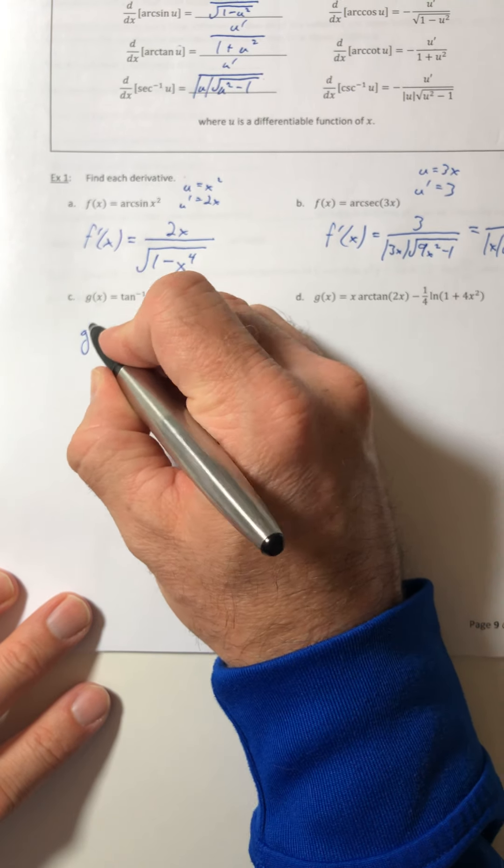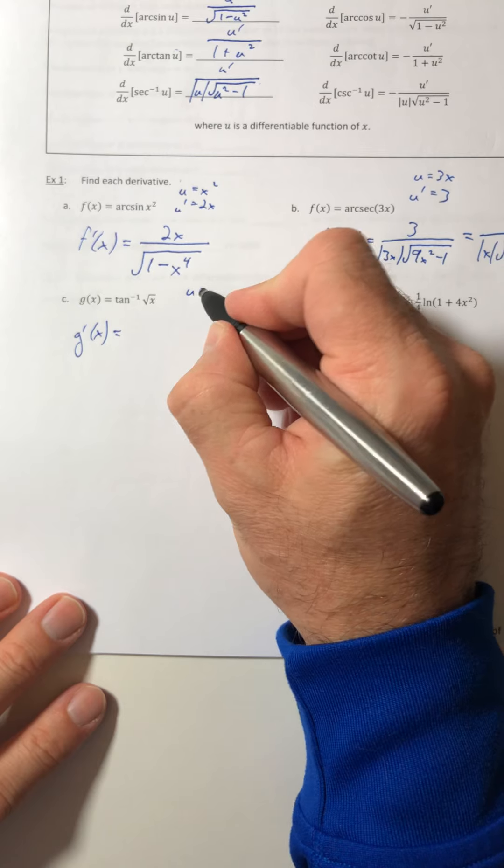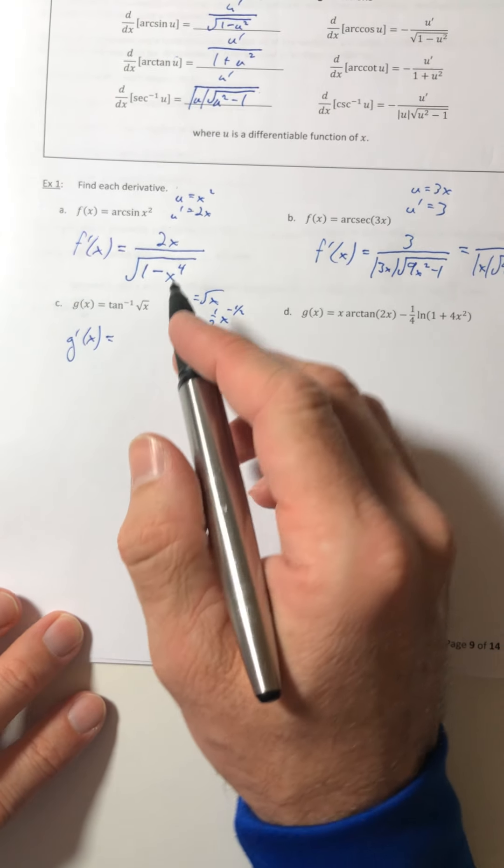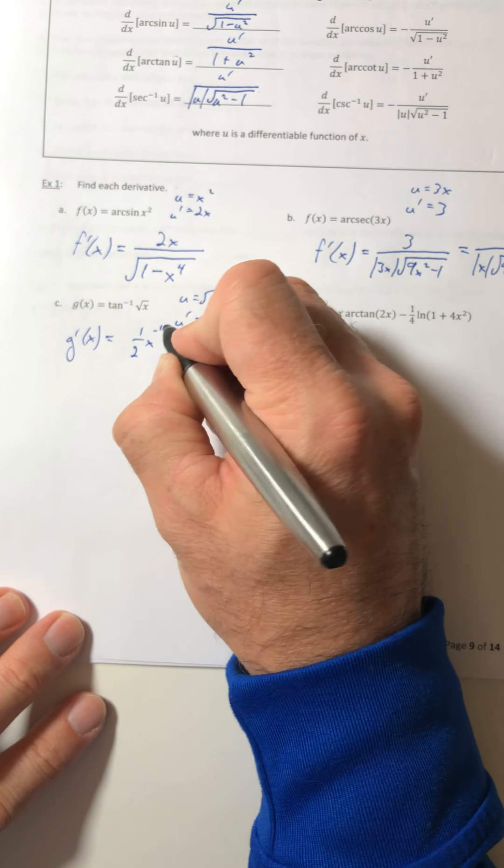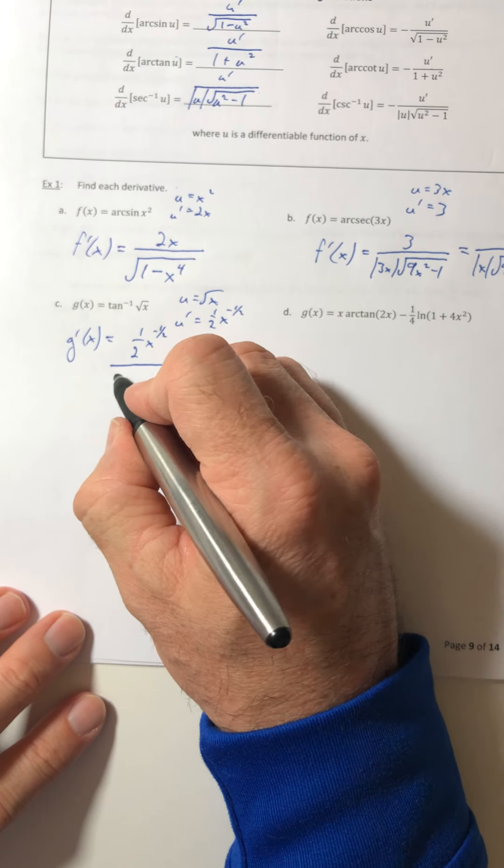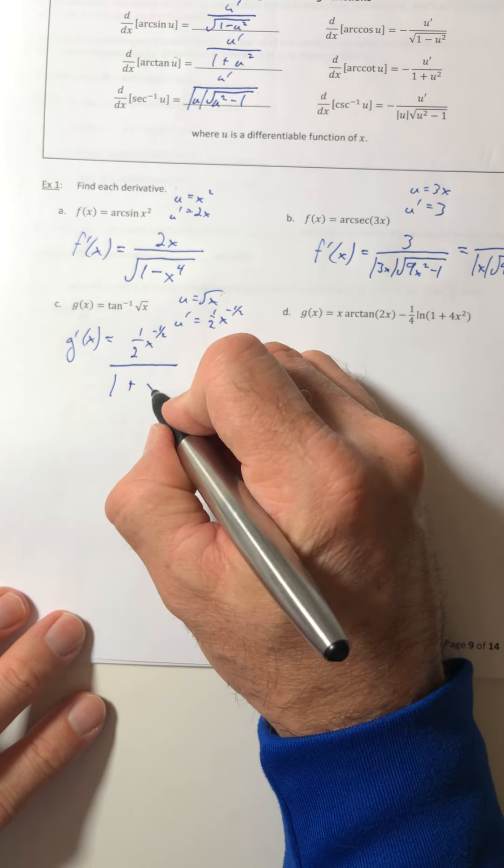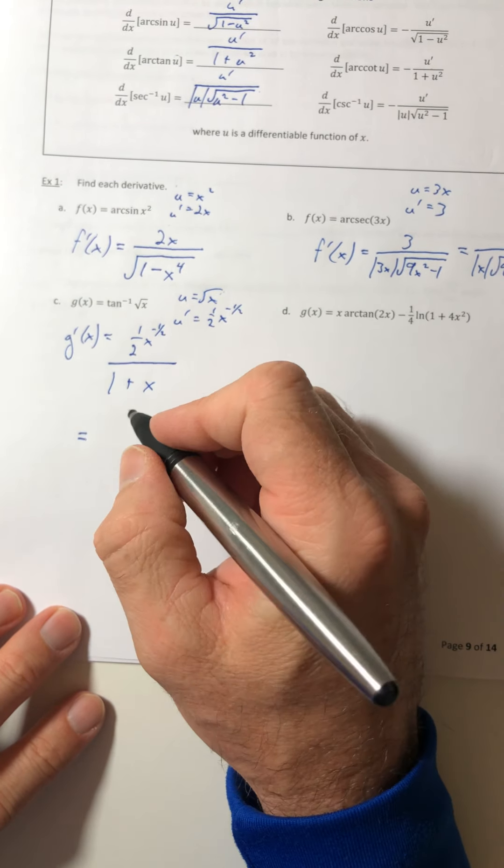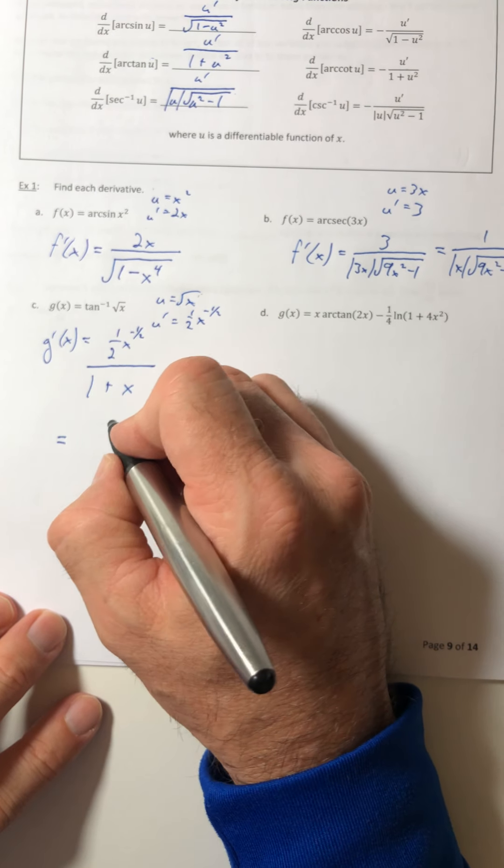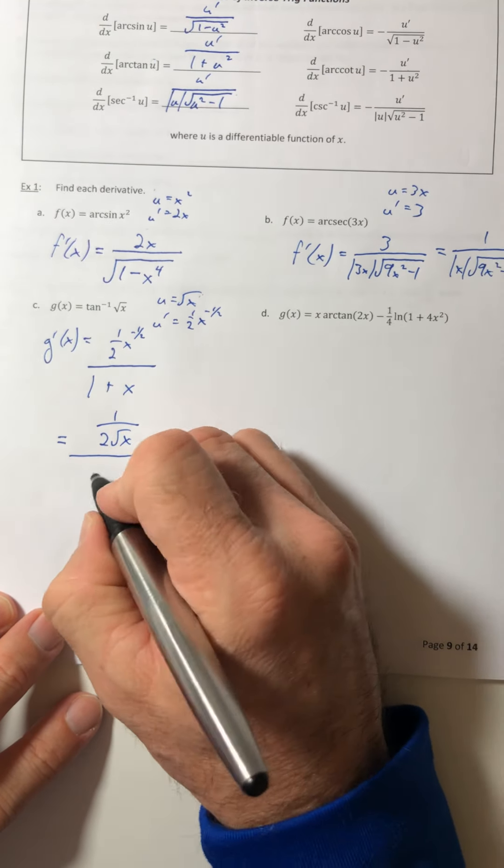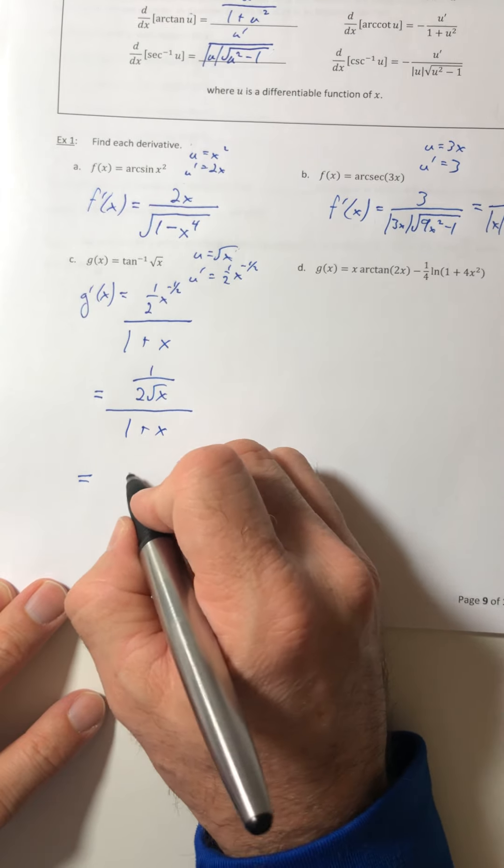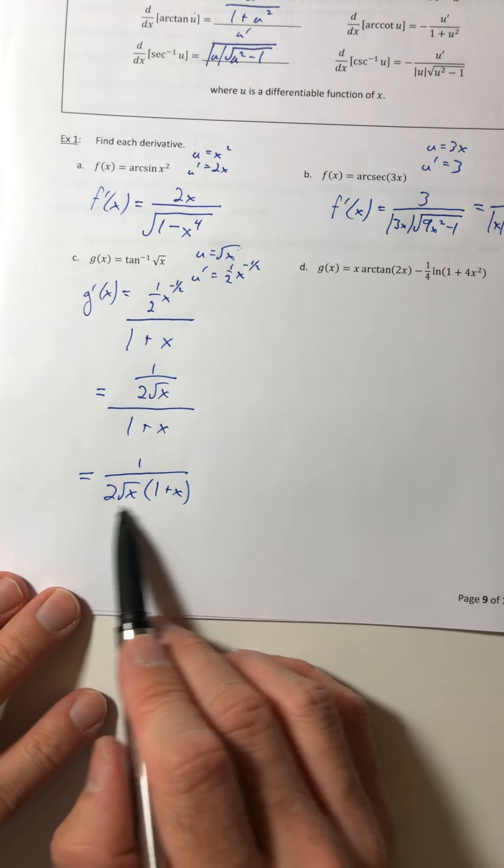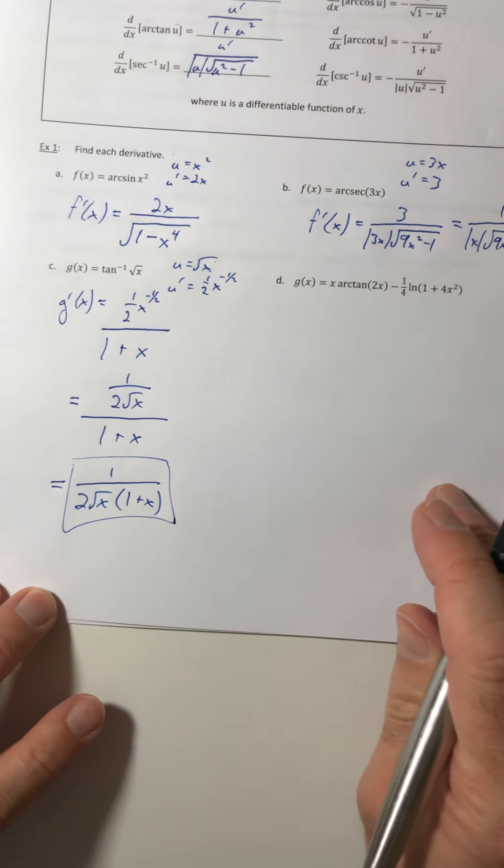Part c. Your u is root x, which means u prime is 1 half x to the negative half. So that's what's going to go in the numerator. All over 1 plus. And then I'm taking the u and I've got to square it. So 1 plus x. Now I can't leave this the way it is because I have a fraction within a fraction. So this x to the negative 1 half, I can stick it next to the 2. Change it back to a radical. And then that 2 root x is going to kind of swing down and get multiplied to the 1 plus x. You can distribute this if you want. Otherwise, you can go ahead and leave it alone.